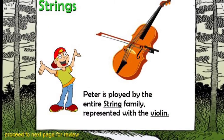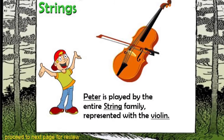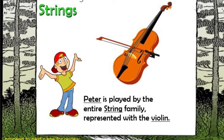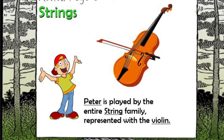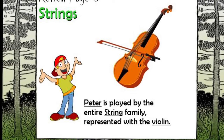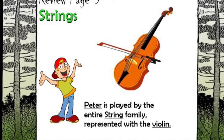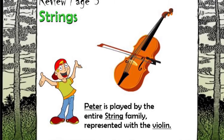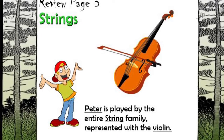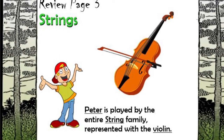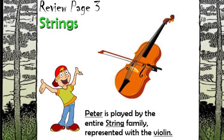For the string section in Peter and the Wolf, we once again only concentrate on one instrument — the violin. But if you listen to the music, you can actually hear the whole string family. Let's just concentrate on the violin for now. The violin made the music for Peter.